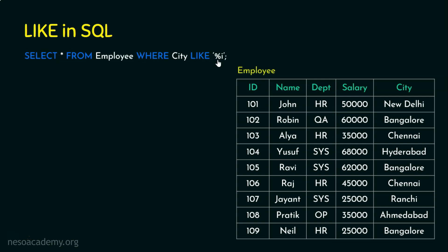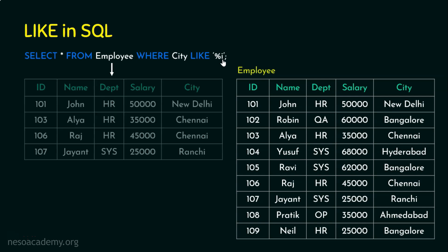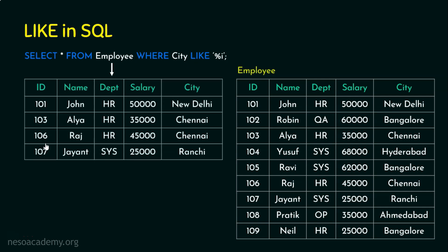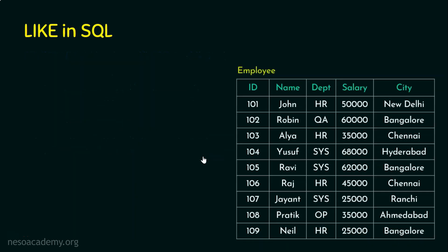Example 2: SELECT * FROM employee WHERE city LIKE '%i'. This means the city can start with any character, but the ending character must be 'i'. The output will be four rows — employee IDs 101, 103, 106, and 107 — because the cities New Delhi, Chennai, Chennai, and Ranchi all end with 'i'.